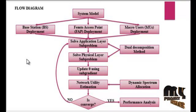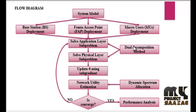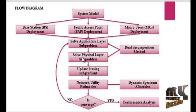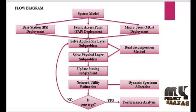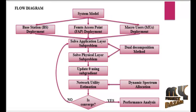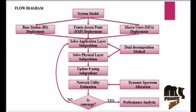The next step is the dual decomposition method. The dual decomposition method is split into two sub-problems: one is the application layer and another is the physical layer. The optimization problem is a mixed binary integer programming problem and is non-convex. However, since the time sharing condition is satisfied in the OFDMA system with a large number of sub-carriers, the duality gap is proved to be zero. Therefore, the Lagrangian dual method is employed to derive the optimal solution.